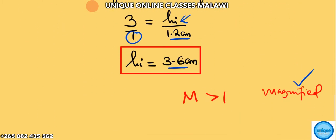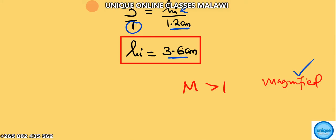So the nature of the image: it's magnified and real. We can also say it's upside down. Most of the times when an image is formed on the screen, it's upside down. If you place an object here, the image will be formed upside down.